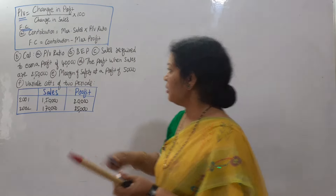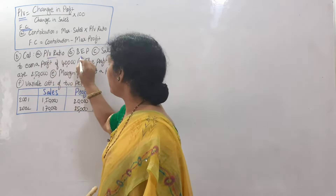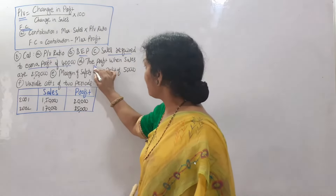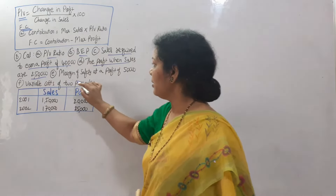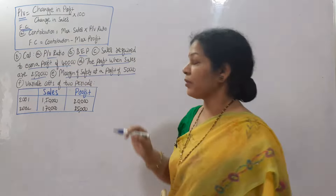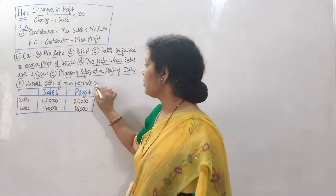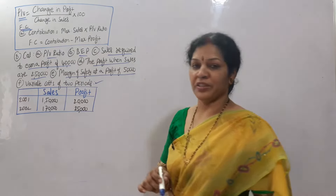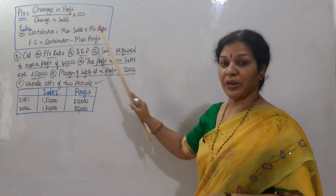The problem asks us to calculate: PV ratio, break-even point, sales required to earn a profit of 40,000, the profit when sales are 2,50,000, margin of safety at a profit of 50,000, and variable cost for two periods. We have to find out all these items.